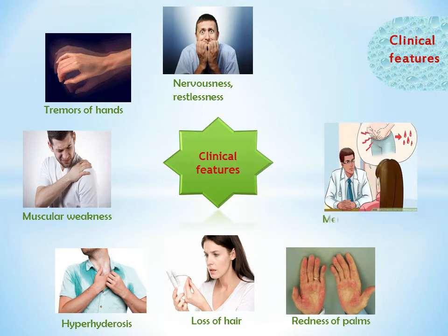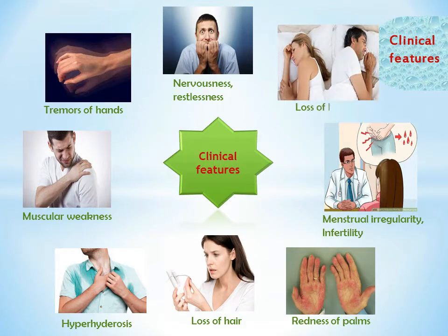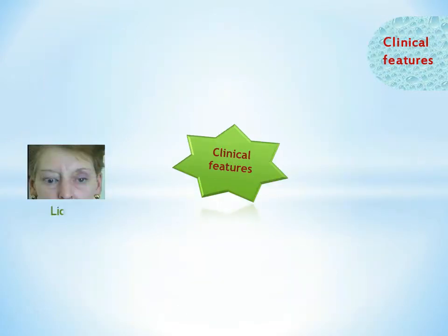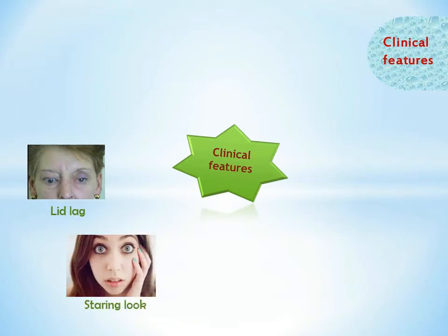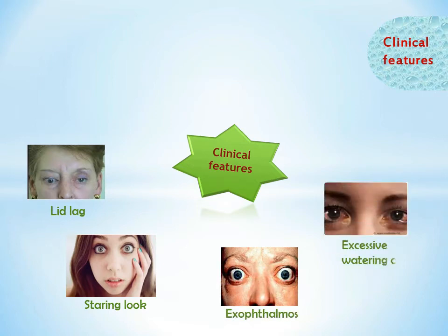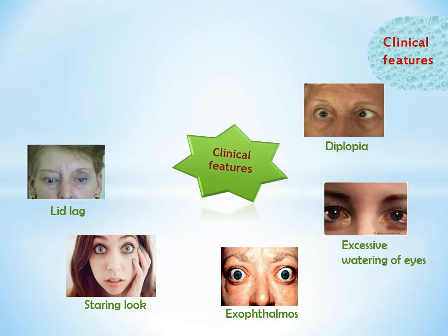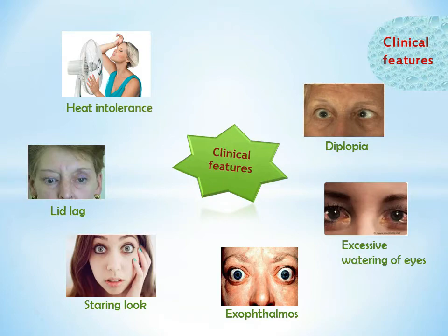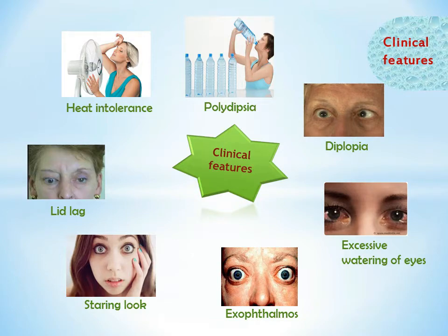Reproductive symptoms include menstrual irregularity — amenorrhea is commonest — abortions, infertility, and loss of libido or impotence. Ophthalmological symptoms include lid lag or lid retraction, staring look, wide palpebral fissures, exophthalmos, excessive watering of eyes, diplopia or double vision, and ophthalmoplegia. Other symptoms include heat intolerance, excessive thirst or polydipsia, outbursts of anger, fatigability, and apathy.